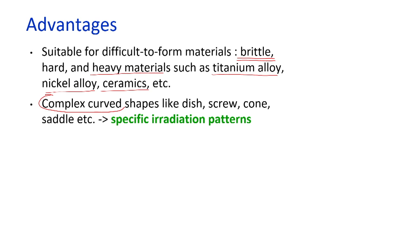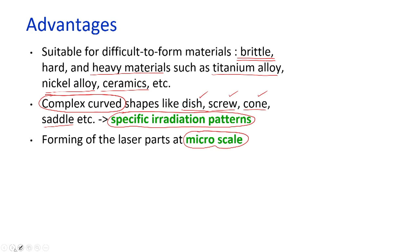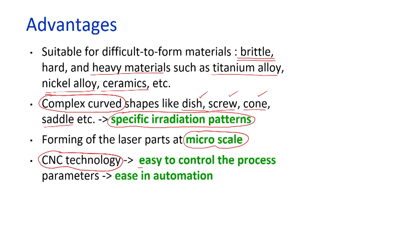Lasers are capable of generating complex curved shapes such as dish, screw, cone, and saddle. Of course, specific irradiation patterns must be designed to obtain these complex shapes. Another very important advantage is micro-scale forming — in mechanical-based forming it is very difficult to achieve 1.5 degrees precisely, but with lasers it is very much possible through controlled laser heating to generate 1 or 1.5 degree bend angles during micro-scale forming operations. With CNC technology, lasers can be easily controlled and automated by providing the required movements to the work part in the XY direction.